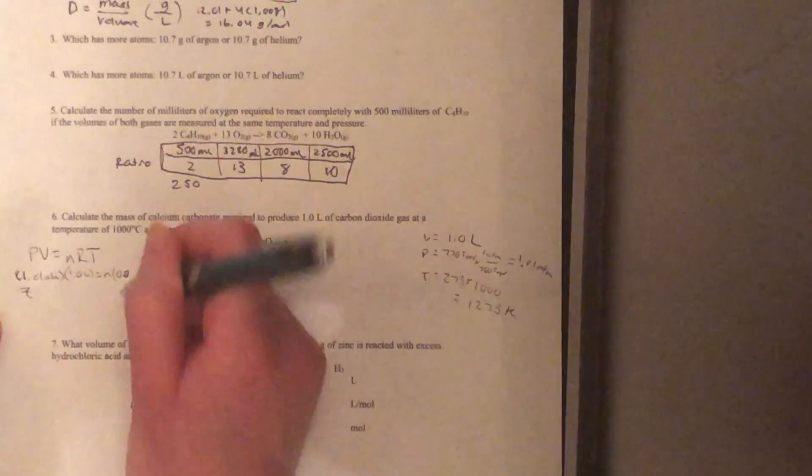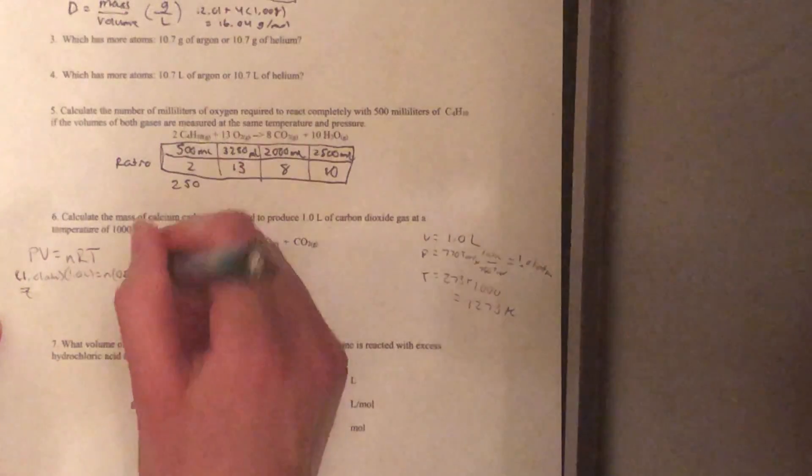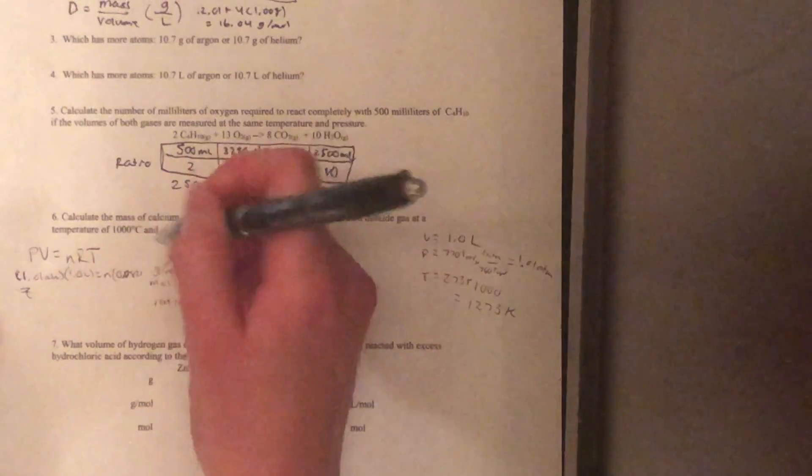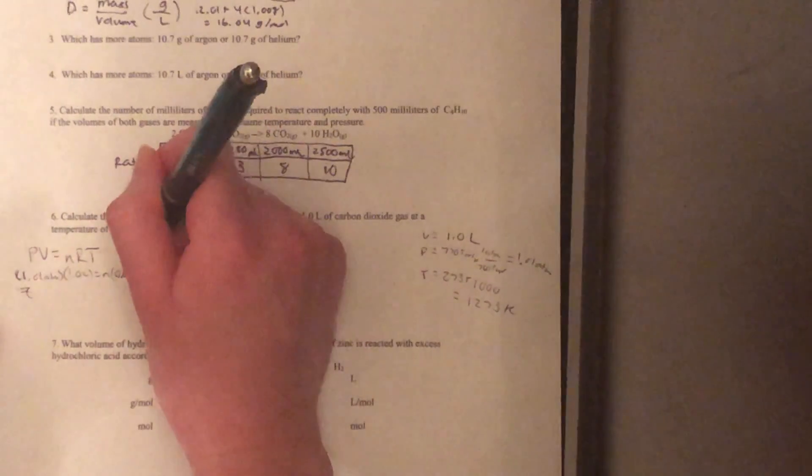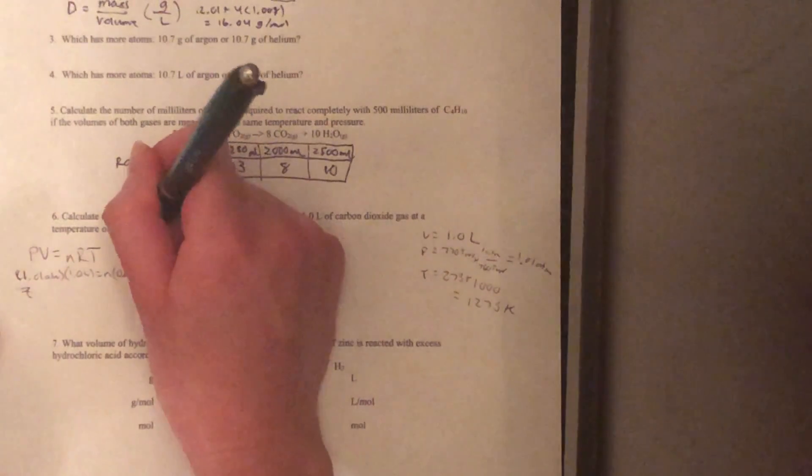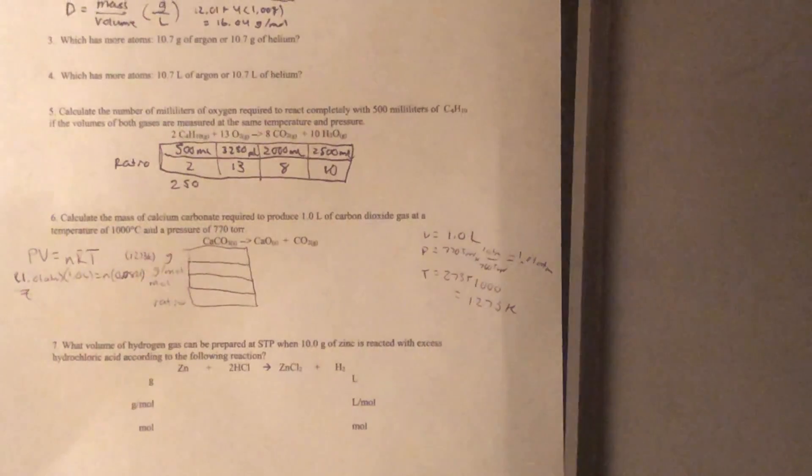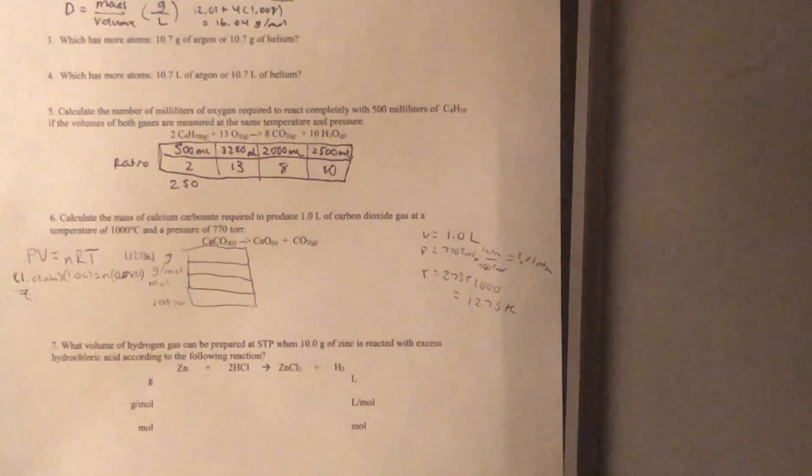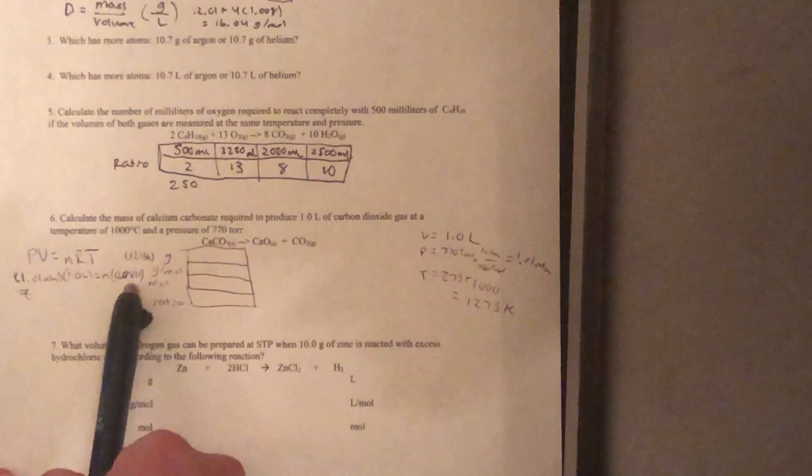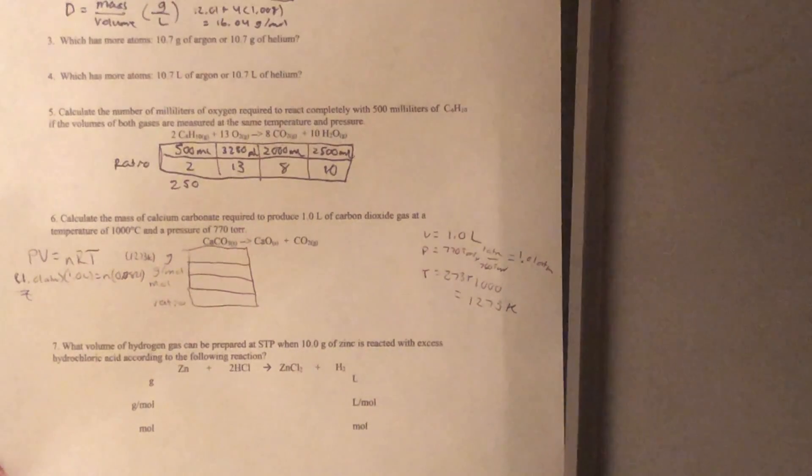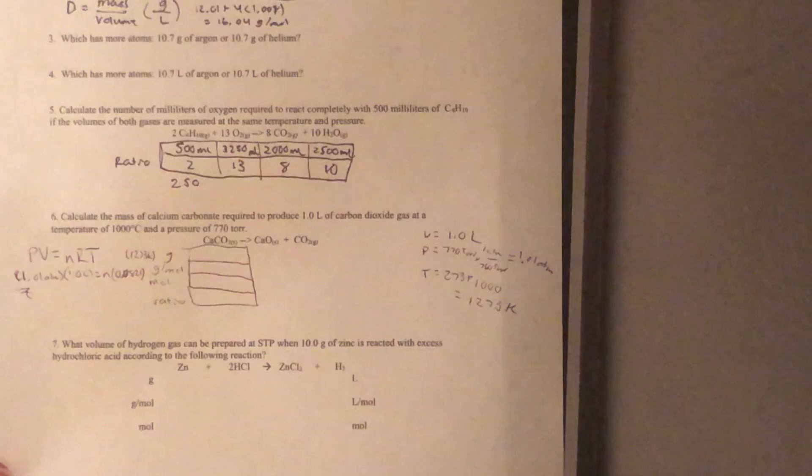Our R is a constant, it's 0.0821. And our T is our 1,273 Kelvin. That's going to be multiplied. And normally I would want to put atmosphere liters over moles Kelvin for the units on R, but definitely ran out of space there.